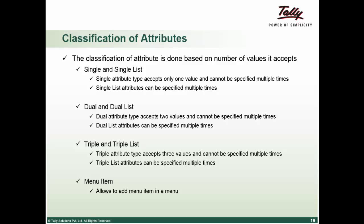A single list type attribute accepts one value and can be specified multiple times. These attributes also accept a comma separated list. For example, field attribute in line definition.